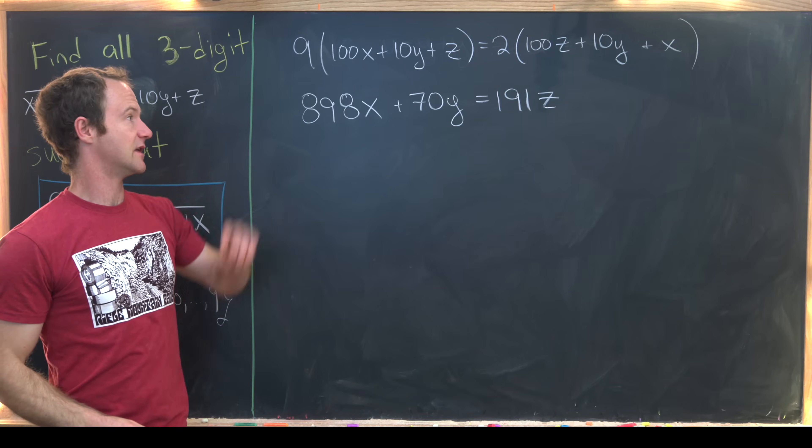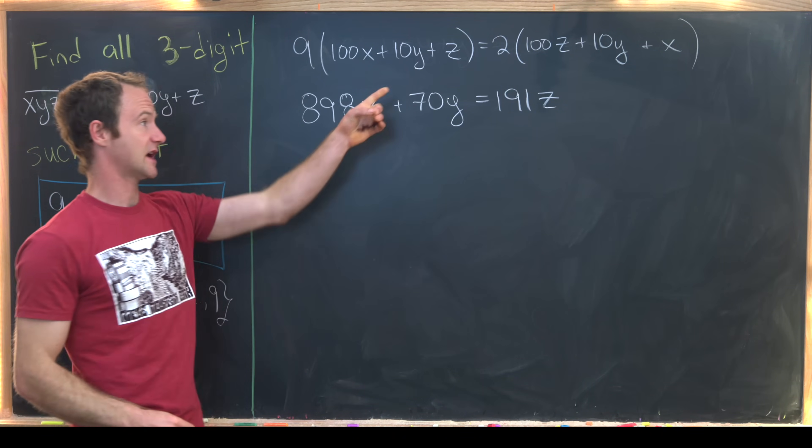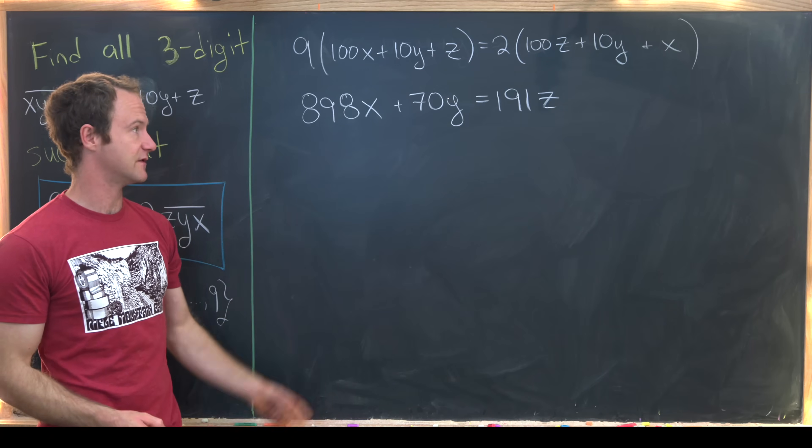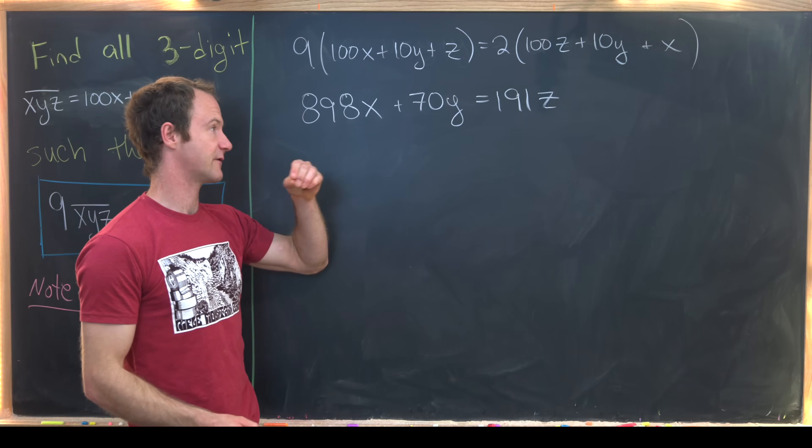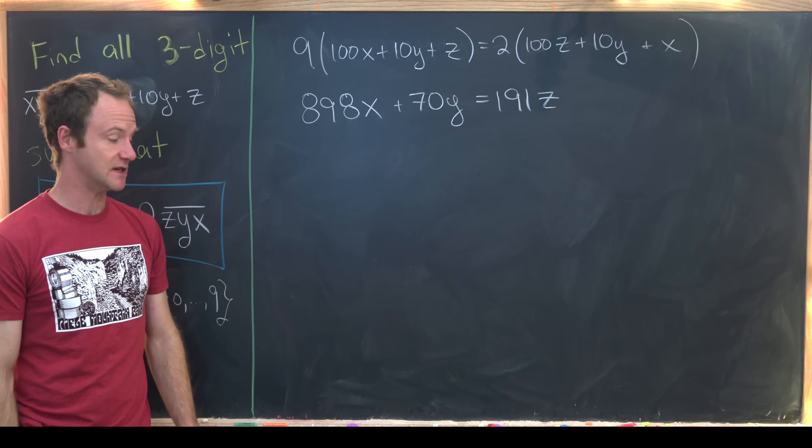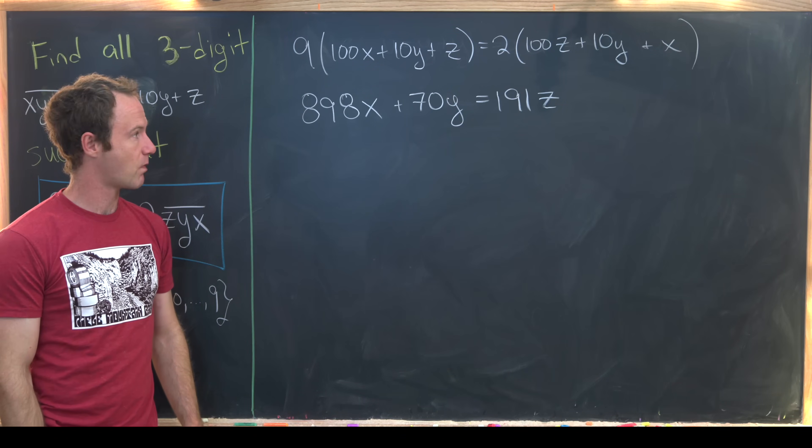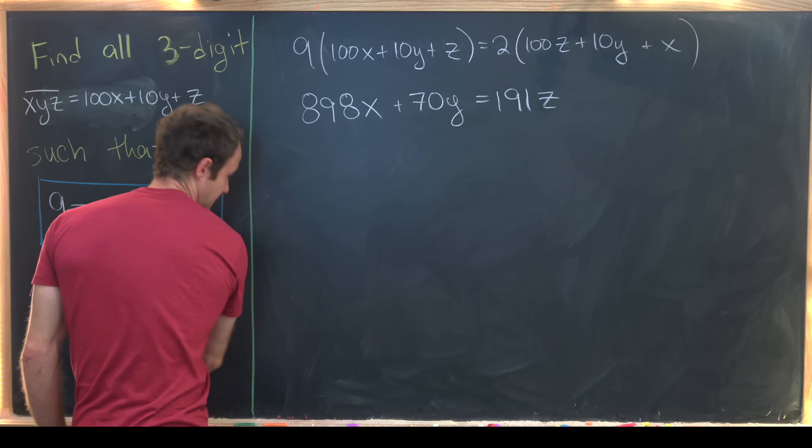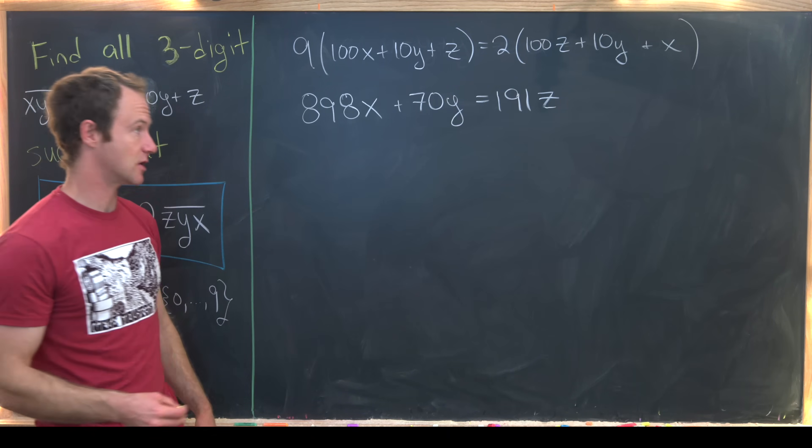So look we've got 900x. We can subtract 2x from what's happening on the other side of the equation. Then similarly for y and it's kind of natural to put z on the right hand side.